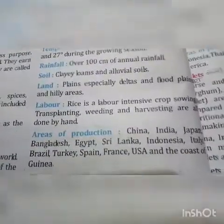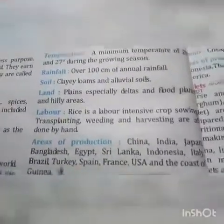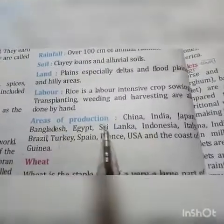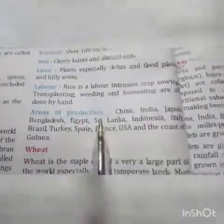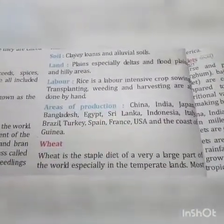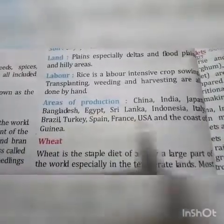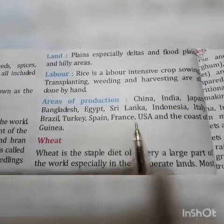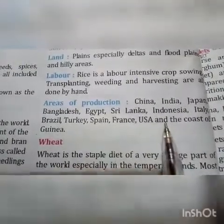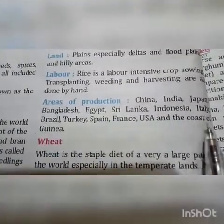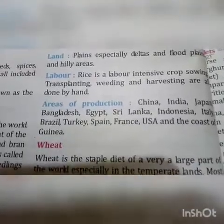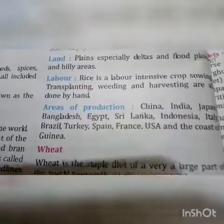Area of production for rice: China, India, Japan, Bangladesh, Egypt, Sri Lanka, Indonesia, Italy, Brazil, Turkey, Spain, France, USA and the other coasts of Guinea. In these places, rice is produced in large quantities.